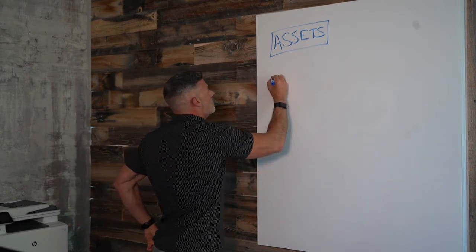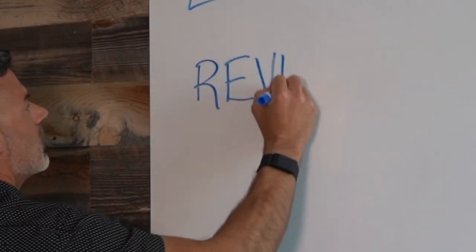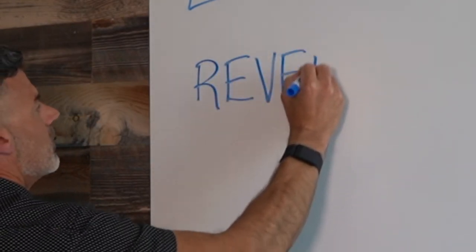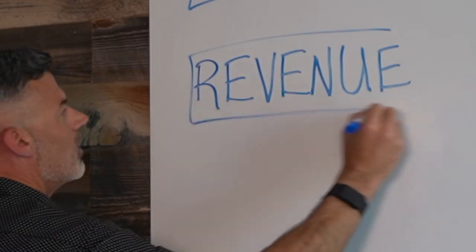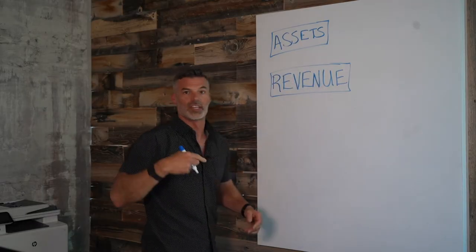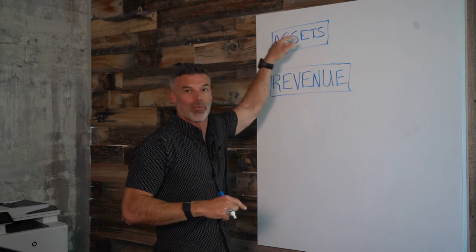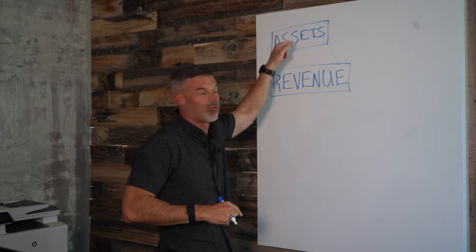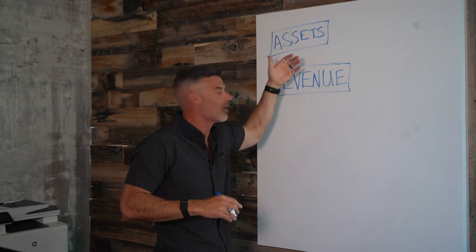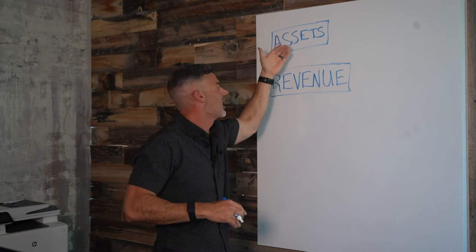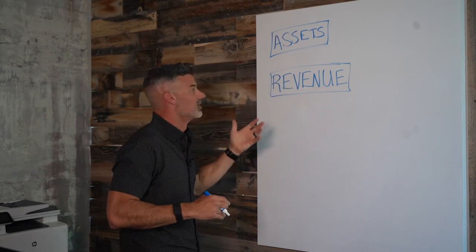From your assets, you've got revenue, which is the second piece. Revenue is the amount of money that you make by converting your assets. If you've got products, it's about how many you sell for how much. If your assets are man hours, then it's how much you can sell those man hours for to create the maximum amount of revenue you can bring into your business.